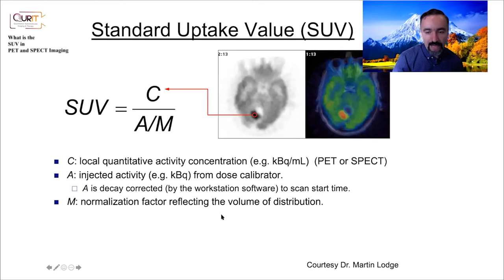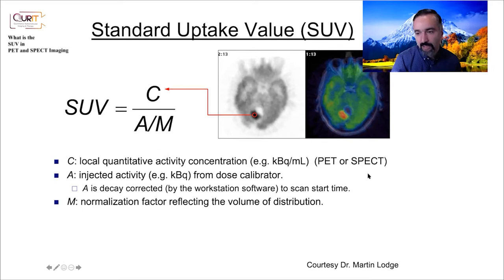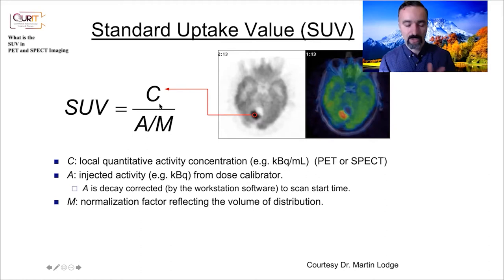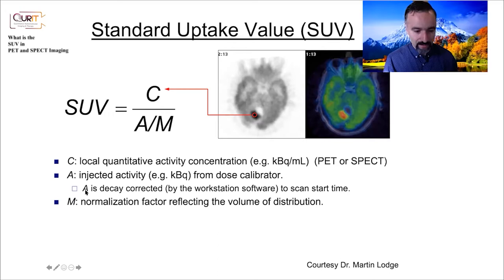So how is the standard uptake value defined? This is the formula. C is the local quantitative activity concentration — let's say in units of kilobecquerels per milliliter. A is the injected radioactivity, as measured in a dose calibrator. Notice that A has to be decay corrected from the time you measure it on the dose calibrator to the scan start time, because the concentration in your image is decay corrected in the reconstruction to the beginning of the scan — so you're talking about the same time reference.